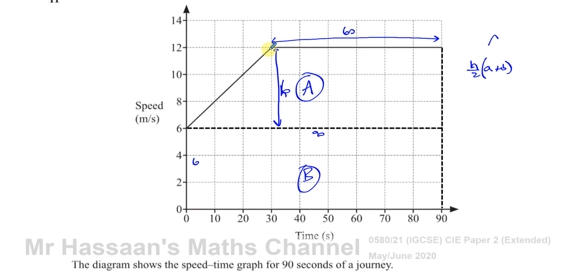We could have also split it into this trapezium over here and this big rectangle. In that case, the distance between the parallel sides would be 30, so you'd have 30 over 2. The sum of the parallel sides would be 6 plus 12. Then you'd add the area of this rectangle, which would be 60 times 12. So that's 15 times 18.